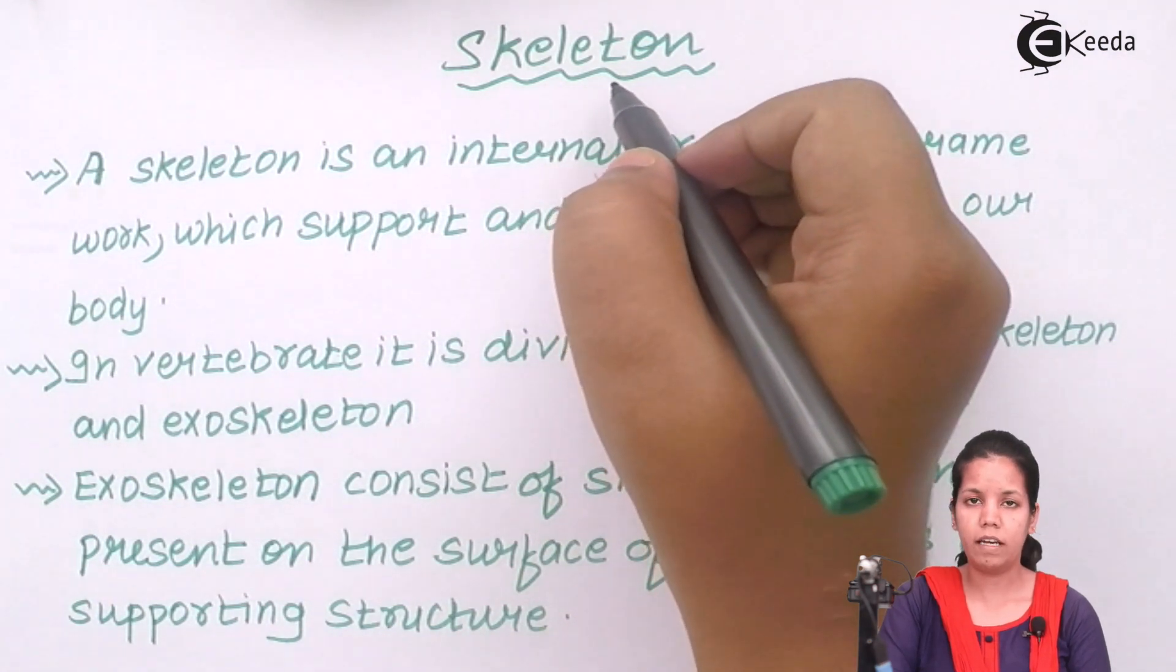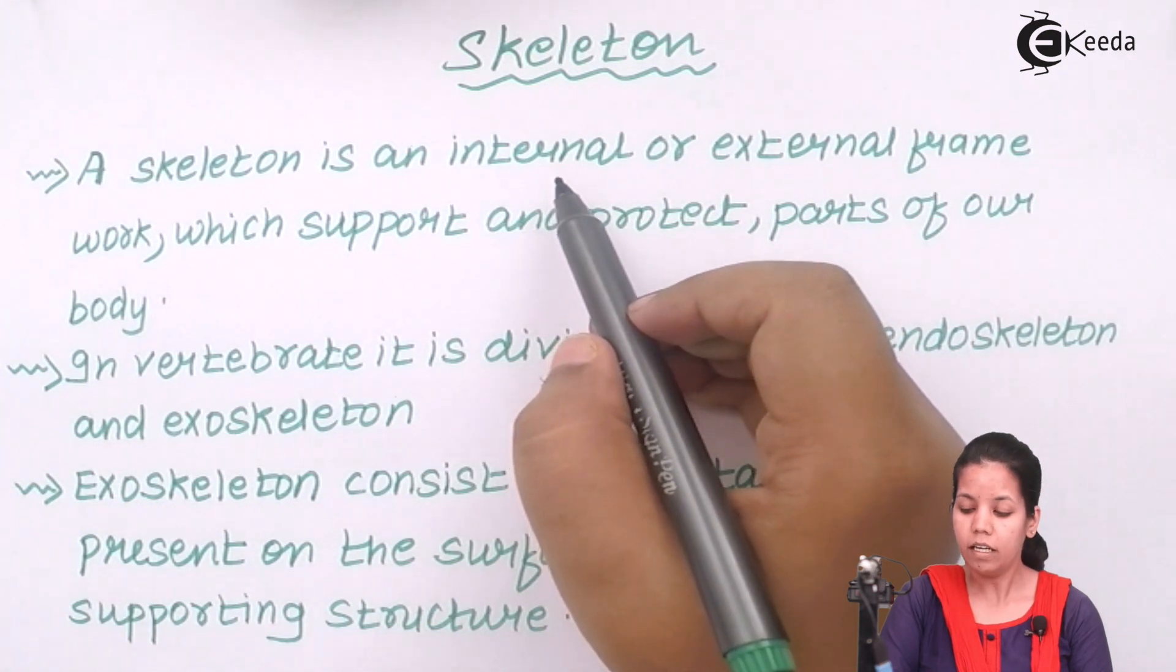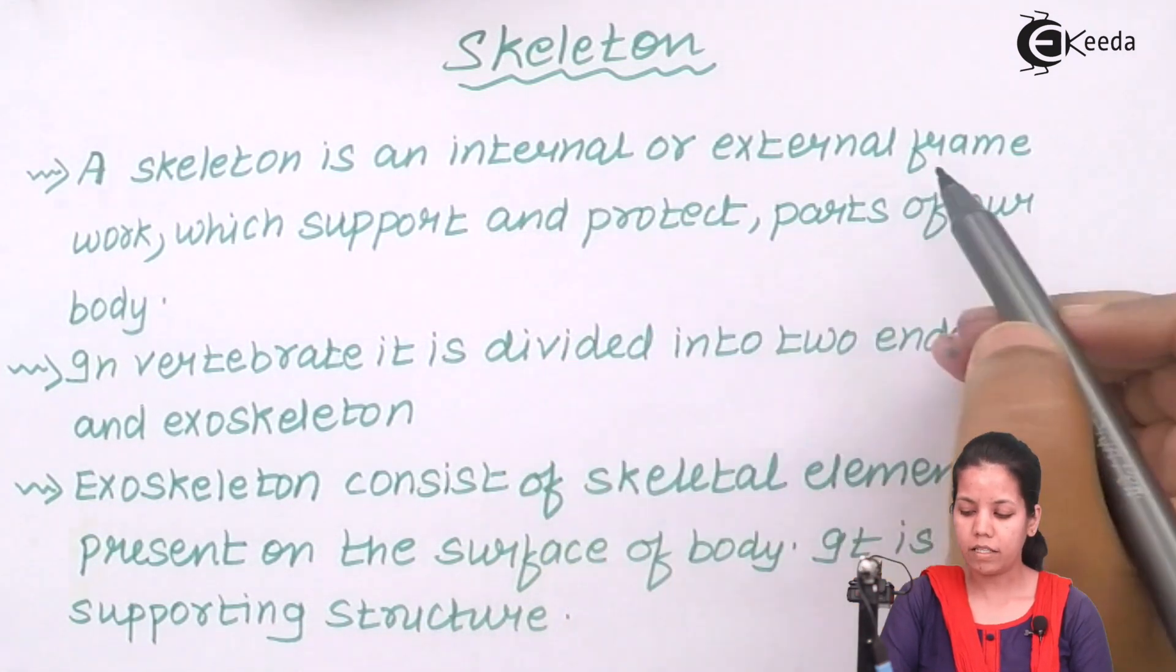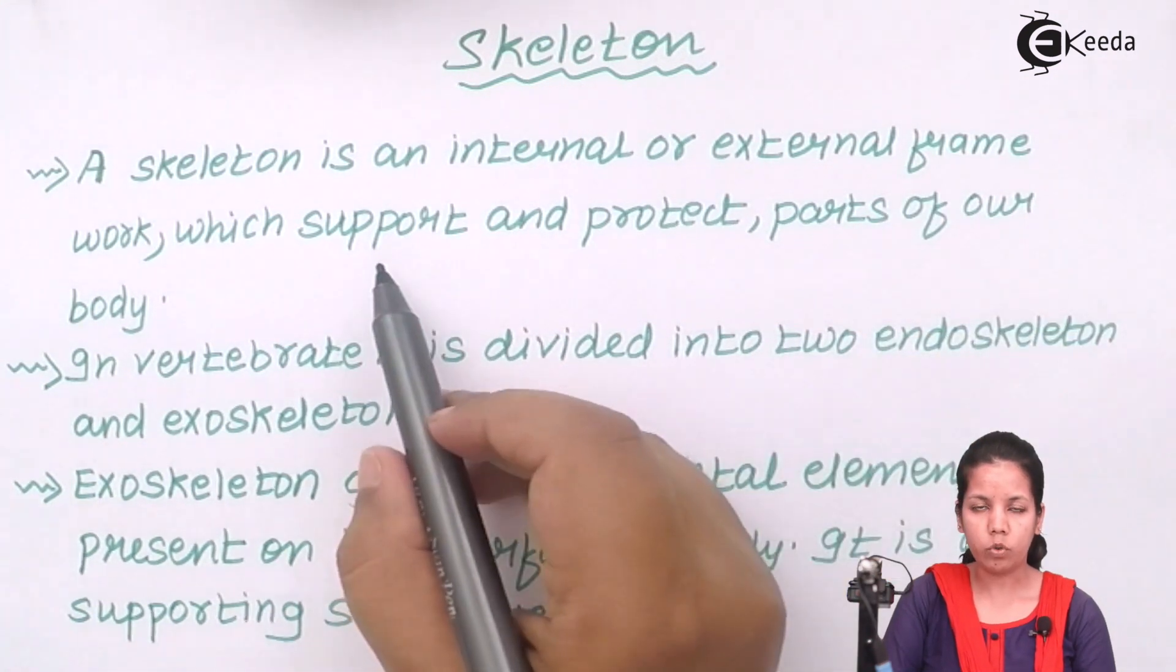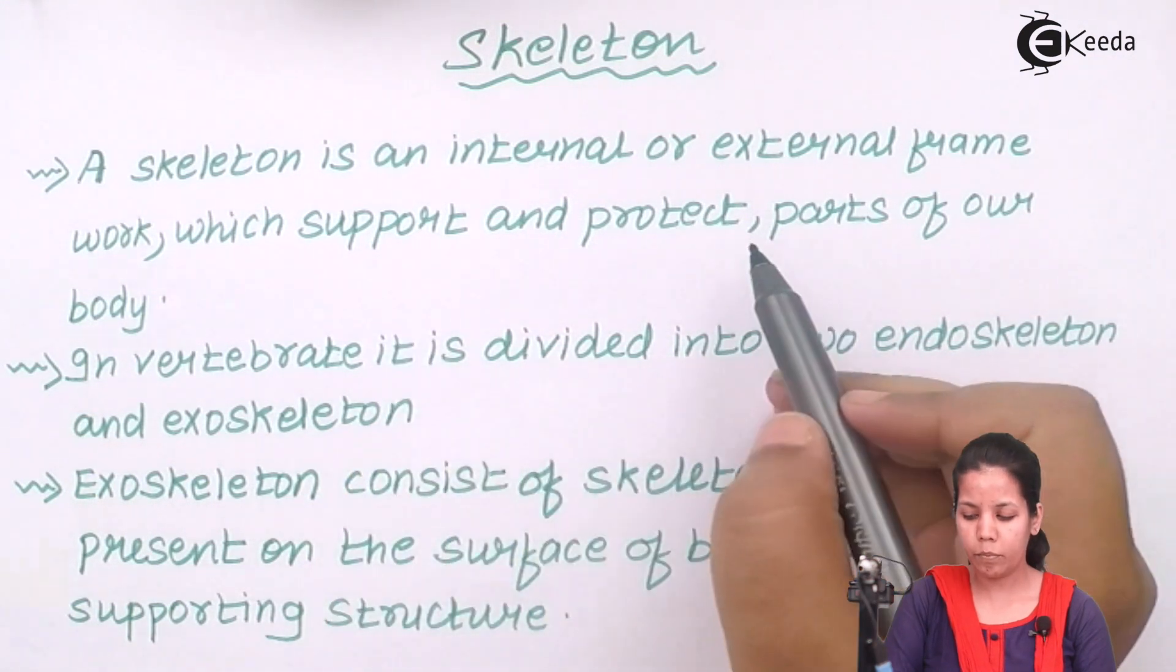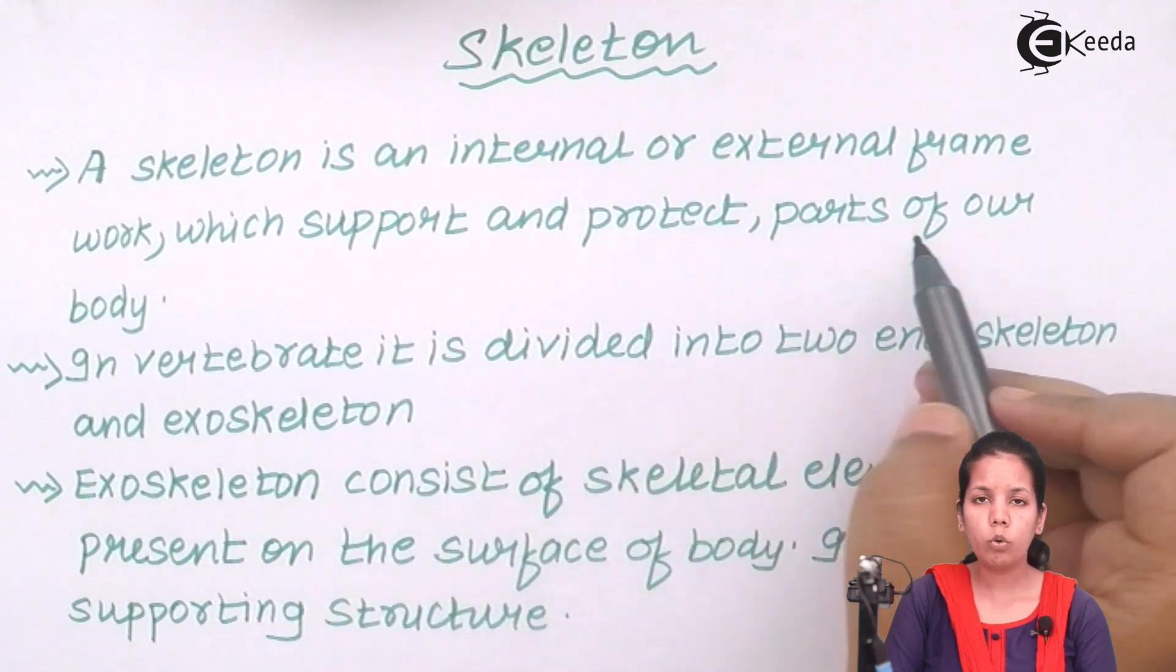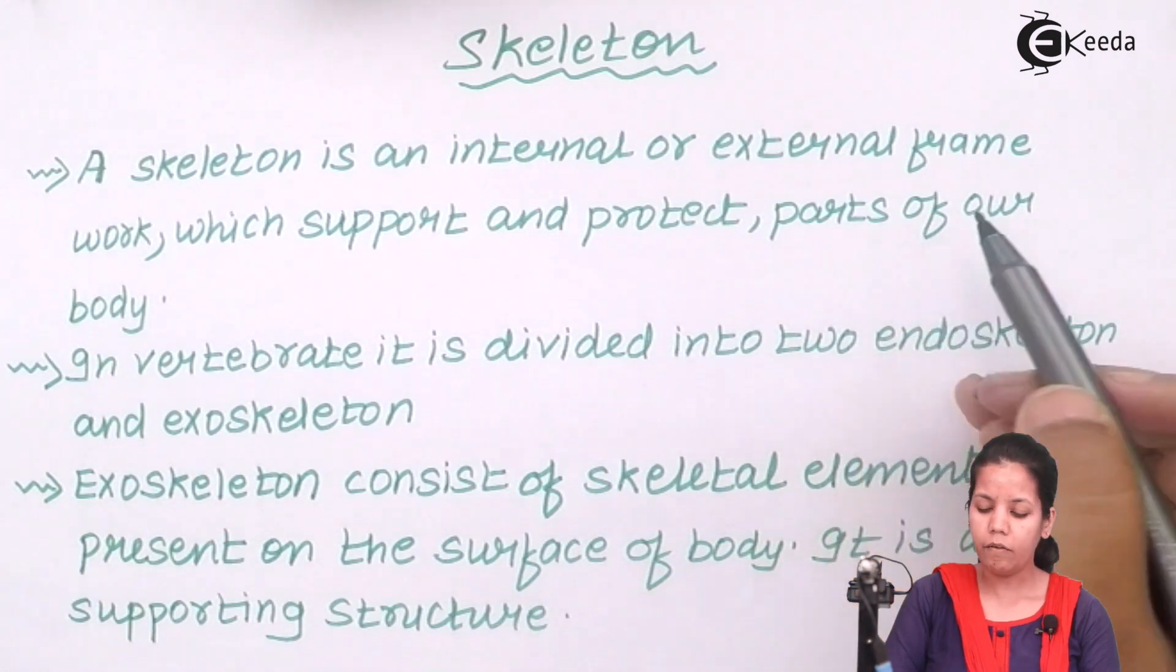If I say the definition of skeleton would be that a skeleton system basically is internal as well as external or outside framework of an individual or of an organism which actually supports and protects or provides protection to various parts of a body. It could be our hands, legs, nose, anything.